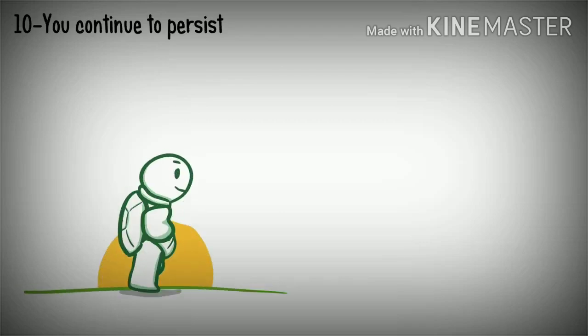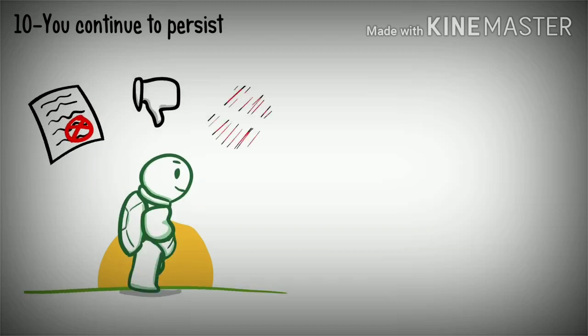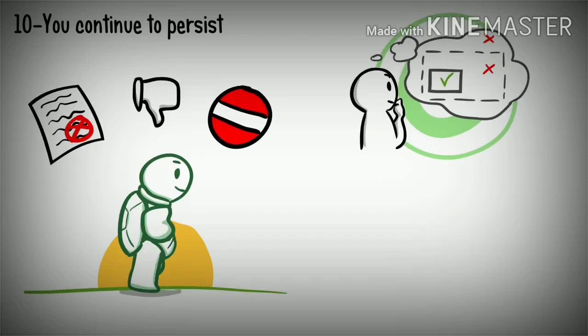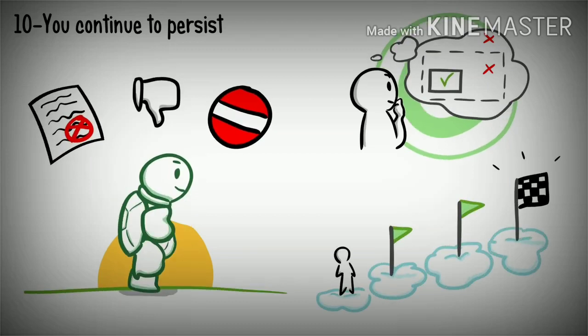10. You continue to persist. Slow and steady wins the race. Rejections, failures, and adversities will come your way, but mentally strong people are aware of their limitations and practice realistic optimism. They don't blow their fantasies out of proportion and focus on what's in front of them. Taking things one day at a time and chunking your dreams into smaller goals will bring you closer to making them real.